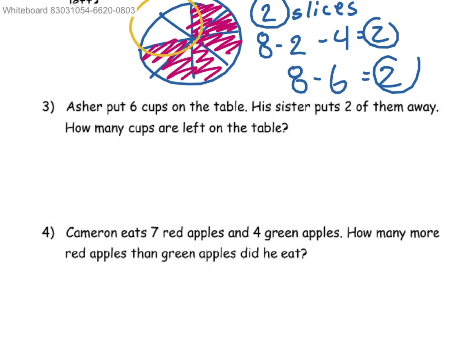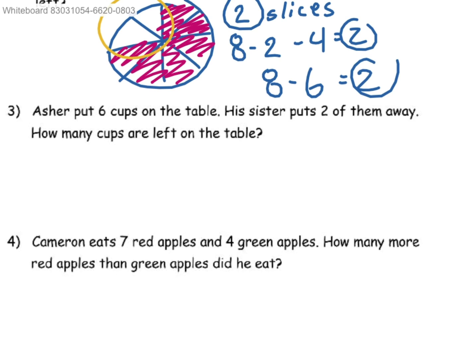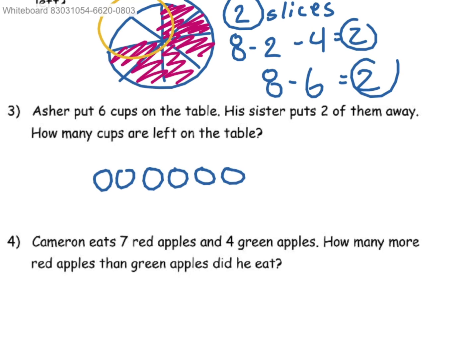Asher put 6 cups on the table. His sister put 2 of them away. How many cups are left on the table? So you would draw 6 cups, then you take away 2 cups and you are left with 4 cups. So 4 cups are left on the table.